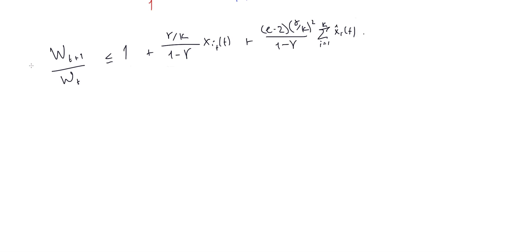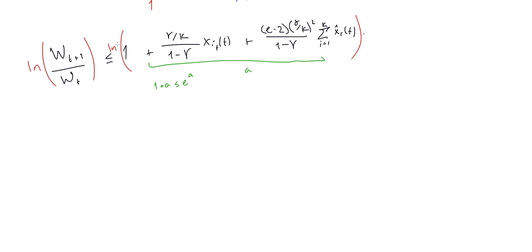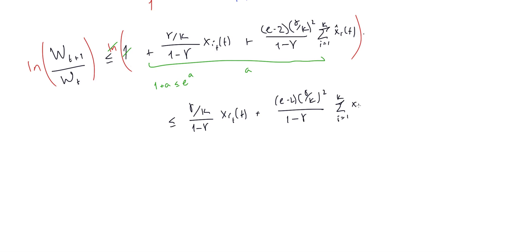What we're going to do now is we're going to take the logarithms of both sides. And we're going to use an extra trick: 1 plus a is less than or equal to e to the a, when a is greater than negative 1. So this is whatever a's we're concerned with. And so here, this is going to be our a. We'll be able to get rid of this log and get rid of this 1 without changing the rest of the terms. So this is just going to be less than or equal to gamma over k divided by 1 minus gamma times x_i sub t, plus e minus 2 gamma over k squared divided by 1 minus gamma times the sum i goes from 1 to k of x_i hat of t.